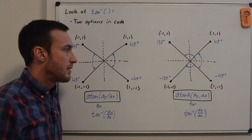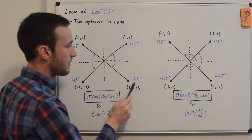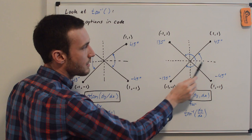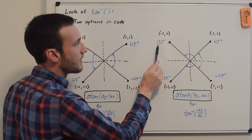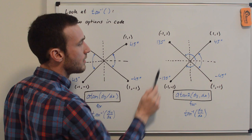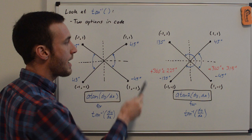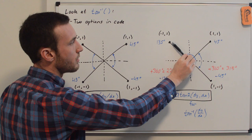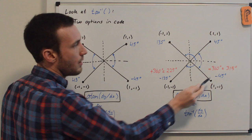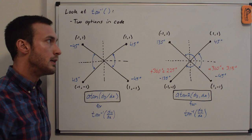Conversely, using the ATAN2 function: (1,1) gives +45°, (1,-1) gives -45° — same as before. But for (-1,1), we get 135° referenced from the positive x-axis, and for (-1,-1) we get -135°. None of these four angles are the same. The nice thing is we can shift these to range from 0 to 360 by adding 360 degrees to any negative angles: so we get 45°, 135°, 225°, and 315°. The point is that we're going to use ATAN2 because we don't want any quadrant ambiguity when finding panel angles.